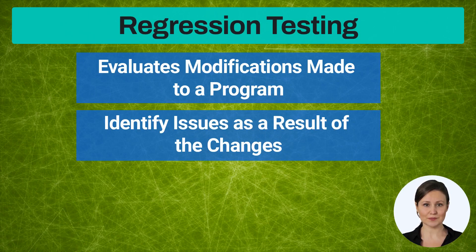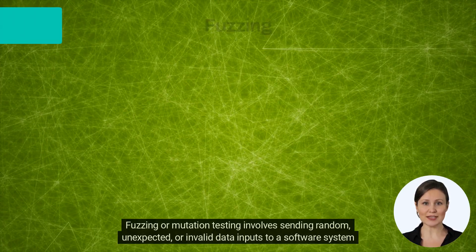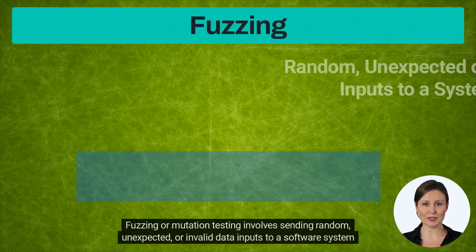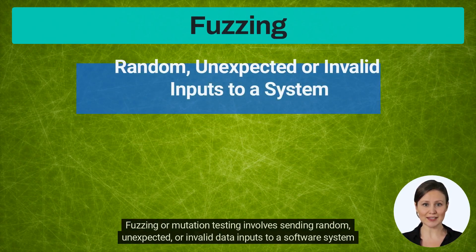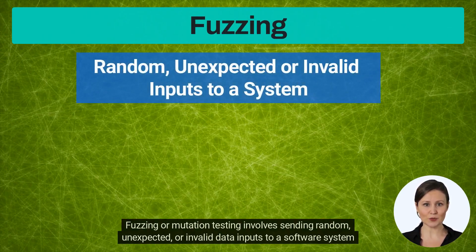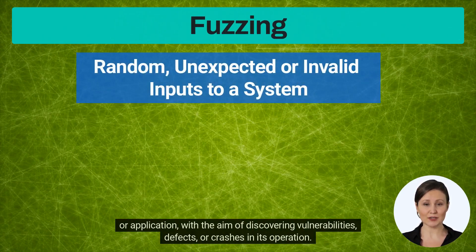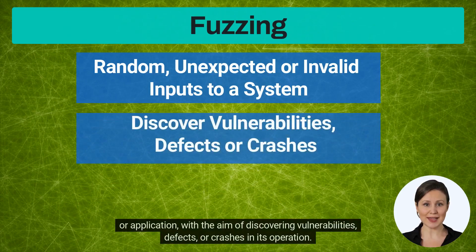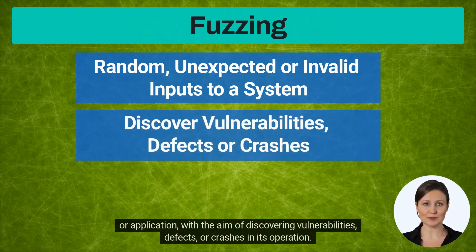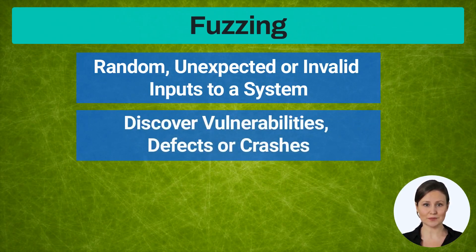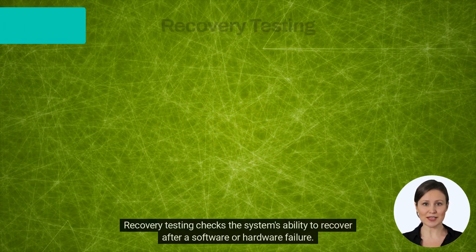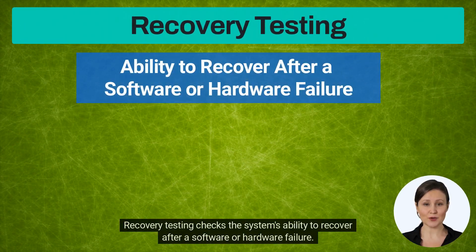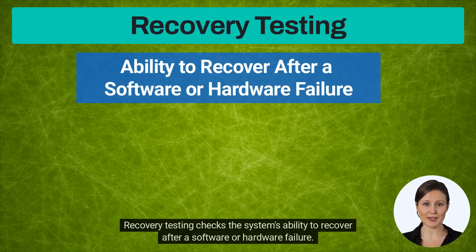Fuzzing, or mutation testing, involves sending random, unexpected, or invalid data inputs to a software system or application with the aim of discovering vulnerabilities, defects, or crashes in its operation. Recovery testing checks the system's ability to recover after a software or hardware failure.